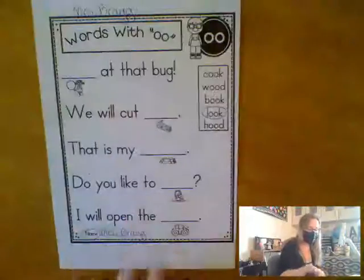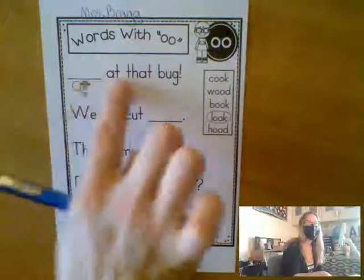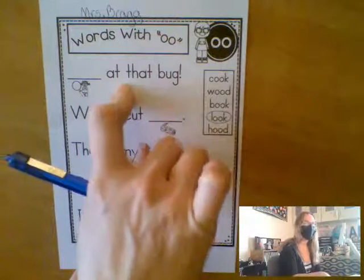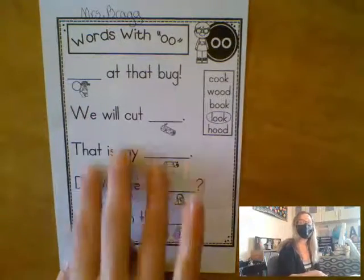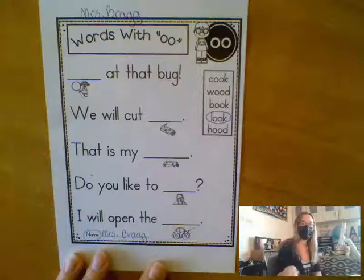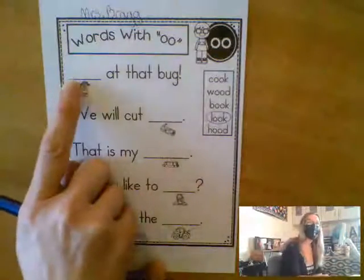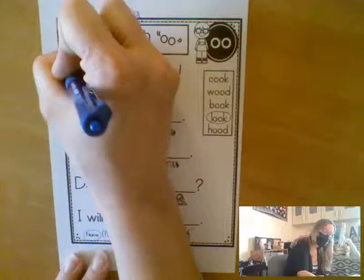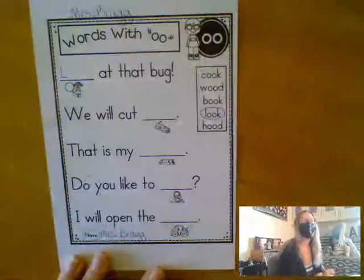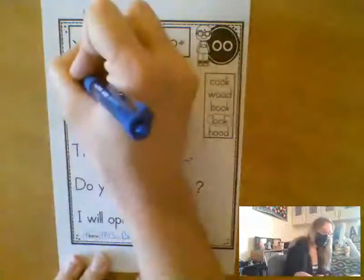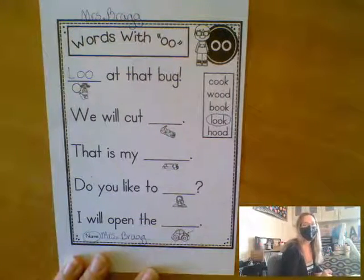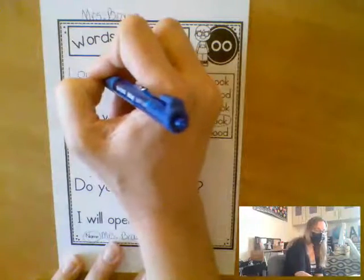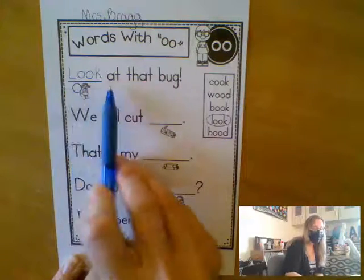So when we write it on the line, because it is the first word in our sentence, what must it have? An uppercase. Now the rest of our words will not be the first word, so the rest of them you're fine to do all lowercase. But because this is the first word in our sentence, we will need an uppercase L for the L sound in look. Then we put our O-O, knowing that O-O together make the U sound. And then finally we have the K-K-K sound. So we have L-O-O-K — look at that bug.